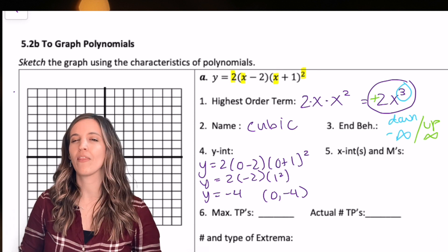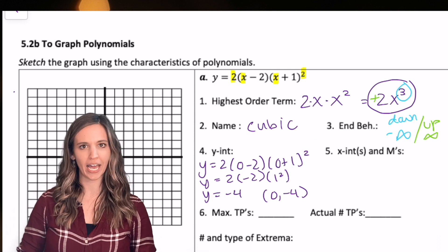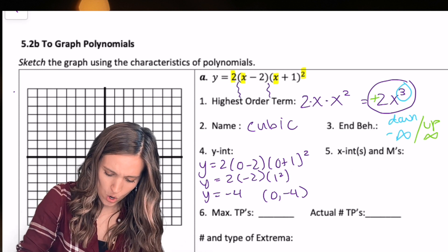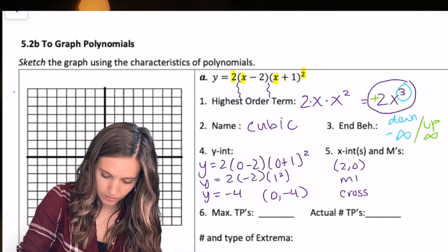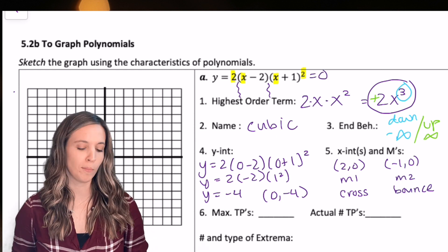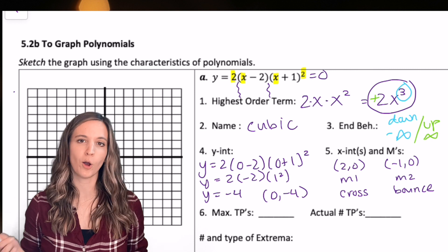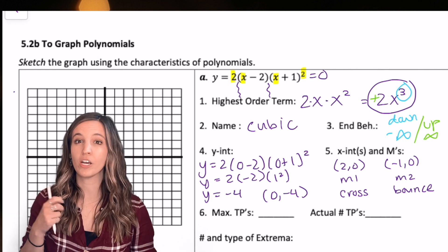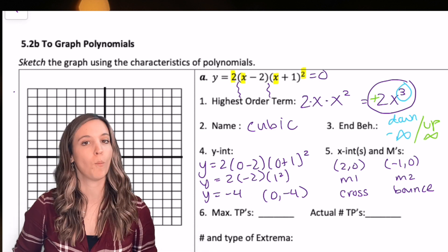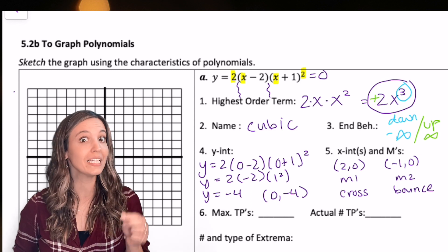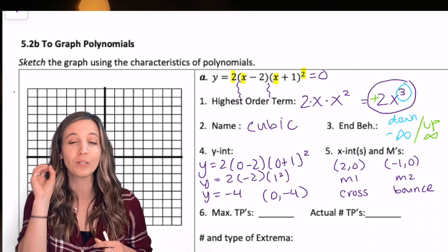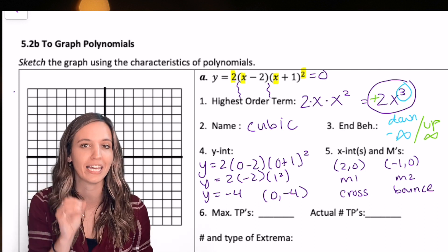X-intercepts and their multiplicities. Take a moment, see if you beat me. So I used zero product property, got x equals two, so two zero multiplicity one, so that's going to be a cross because it's odd, and then I got negative one zero multiplicity two, so multiplicity is even, so that's going to be a bounce. Be careful. It's the multiplicity that's even or odd, not the intercept itself.